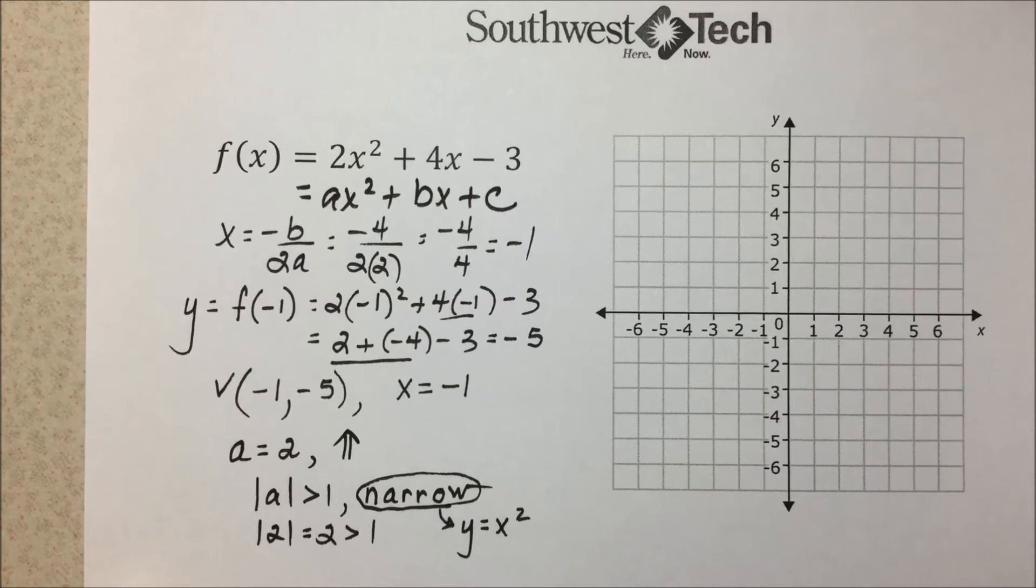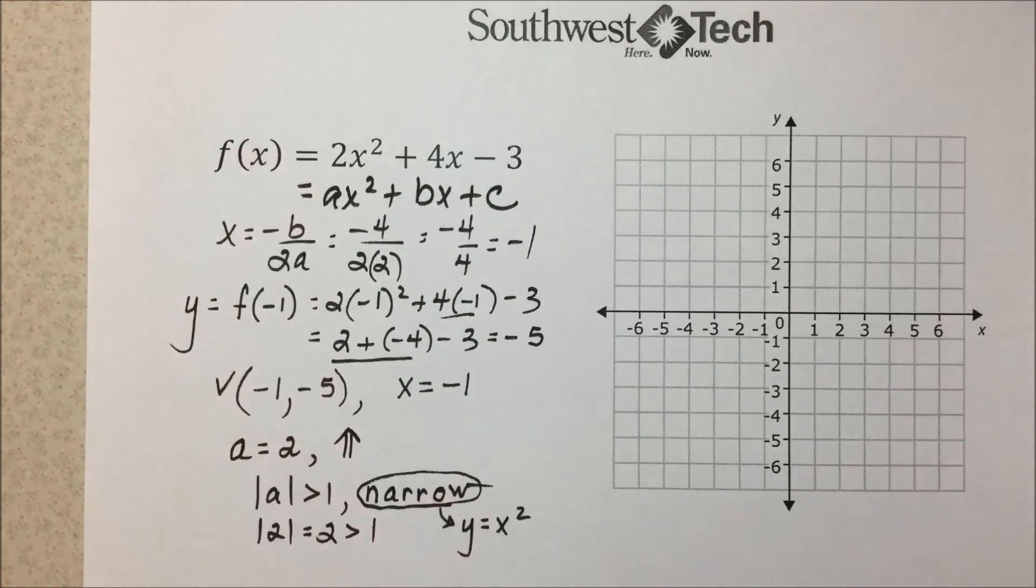One more piece of information to pull off this quadratic function to graph it is to find the y-intercept, which means we're letting x equal 0, resulting in the ordered pair (0, c), which is a -3.